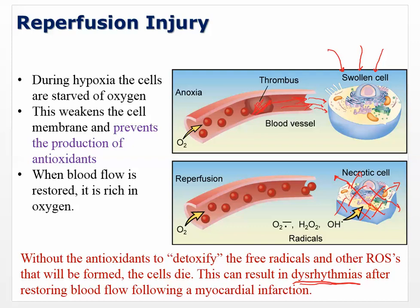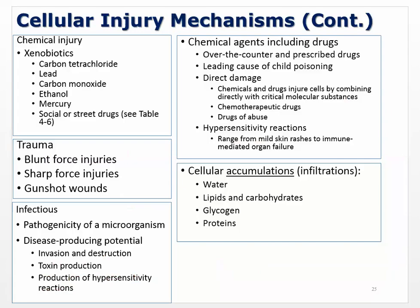During hypoxia, cells are starved of oxygen — this weakens the cell membrane and prevents production of antioxidants. When blood flow is restored, it is rich in oxygen. Without antioxidants to detoxify the free radicals and reactive oxygen species formed, the cells can die. This can result in dysrhythmias after restoring blood flow following a myocardial infarction, as well as elevated troponin levels indicating damaged heart muscle cells.